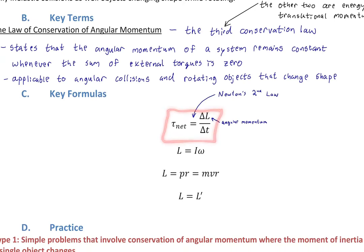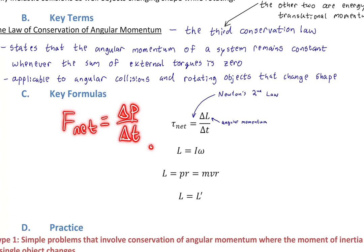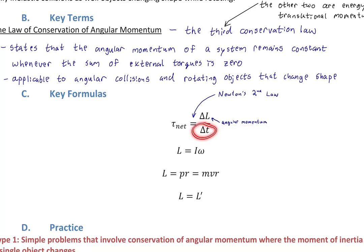Compare this angular momentum form of Newton's second law to the translational form: F_net = delta P / delta t. We've just replaced F with tau and P (translational momentum) with L (angular momentum). Delta t is obviously change in time.